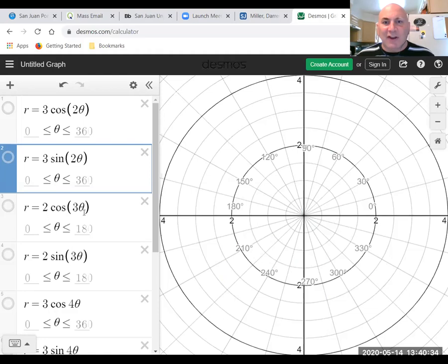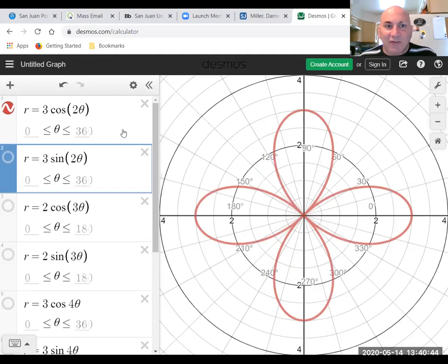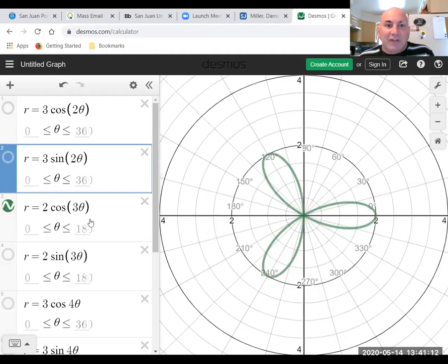Now we're going to do 2 cosine of 3 theta. Let's actually go back to the cosine of 2 theta. Notice that cosine has a leaf centered there on the x-axis. And the reason for that is, where is cosine a maximum? At what theta? So theta equals 0. So 2 times 0 is 0. The cosine is 1. r is 3 times 1 or 3. So cosine is going to be centered here on that x-axis. Same here. This time, centered on the x-axis. n is 3, but it only has three petals. But notice it only goes 0 to 180 degrees.